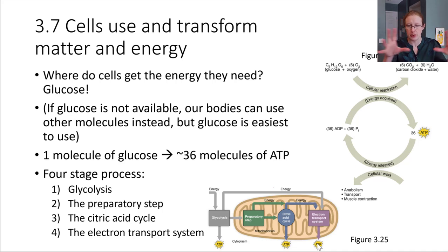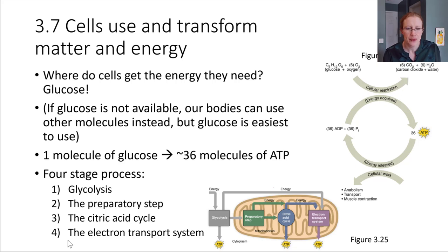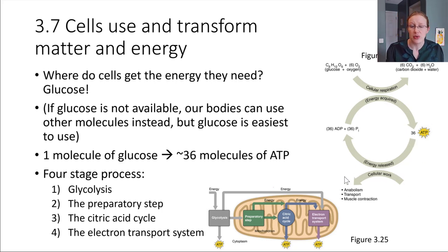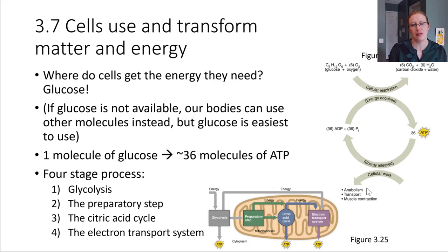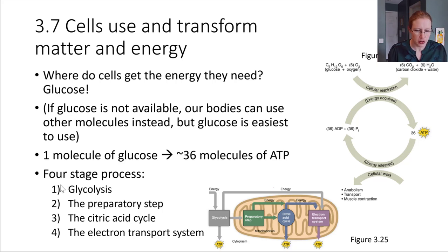From an overall perspective, we're going to be using a molecule of glucose, run it through the process of cellular respiration — which involves these steps — and generate 36 molecules of ATP. Those ATP molecules can then be used for cellular work: transporting things, powering anabolic pathways, and lots of other things. So let's start off with glycolysis, the first of these four stages.